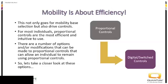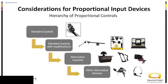We want to look at proportional controls first; if we've ruled that out, then move to digital or switch controls. Within those proportional controls, the hierarchy — or decision-making process — starts with the standard inline joystick. That's the joystick that comes with the power mobility device. We consider it, and either rule it out or recommend it. If the standard inline joystick isn't an option, then we see what modifications we can make to it.